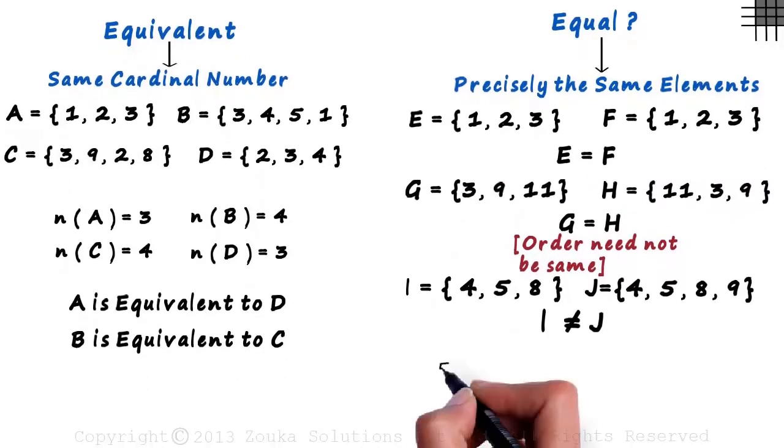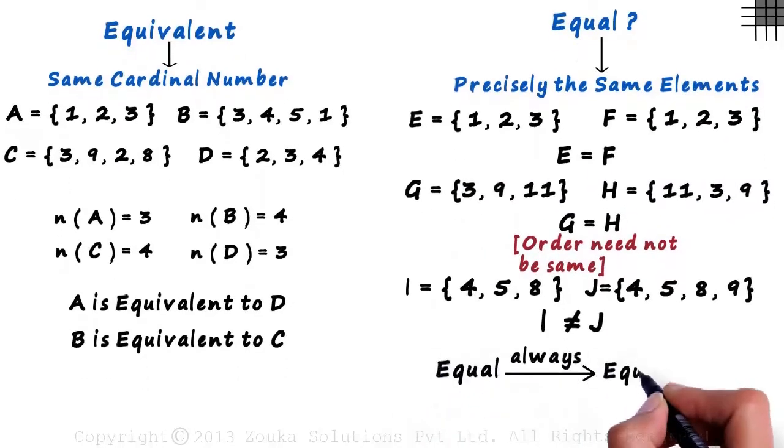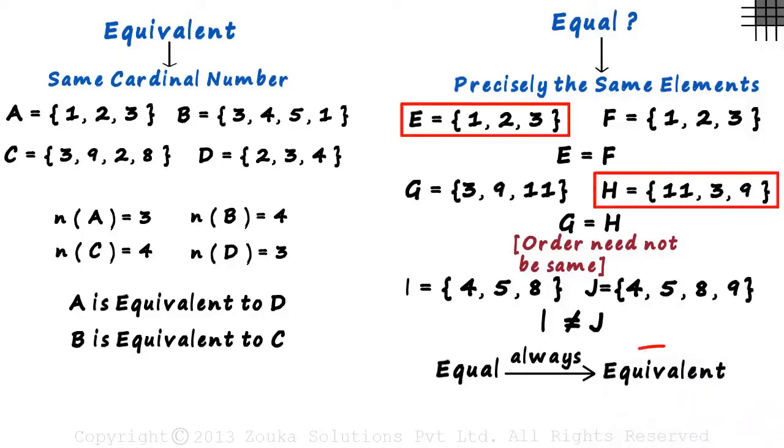Remember, two sets that are equal will always be equivalent. Now look at sets E and H. They are equivalent, but since the elements are not the same, they are not equal.